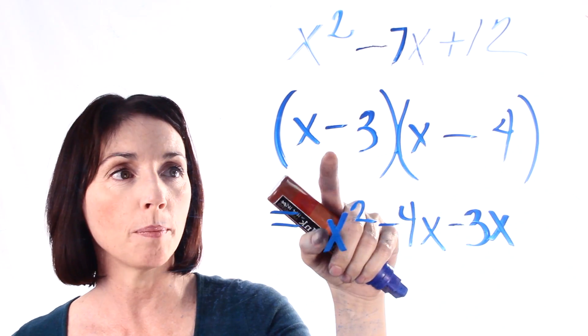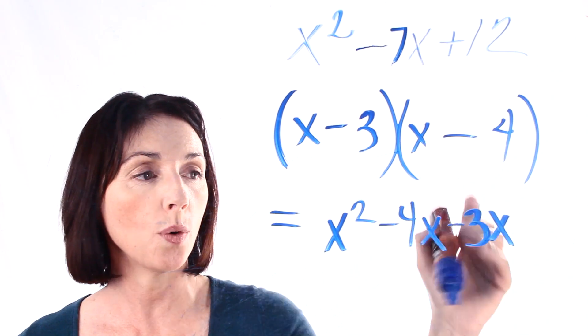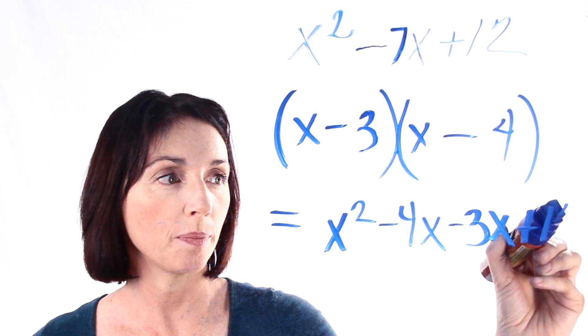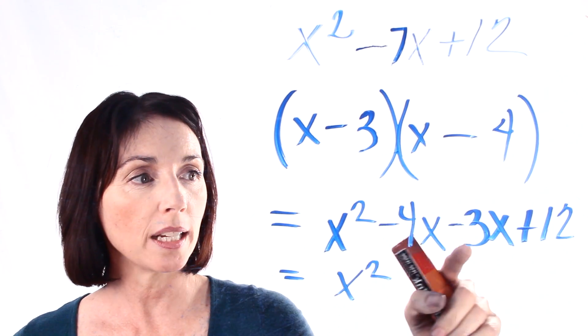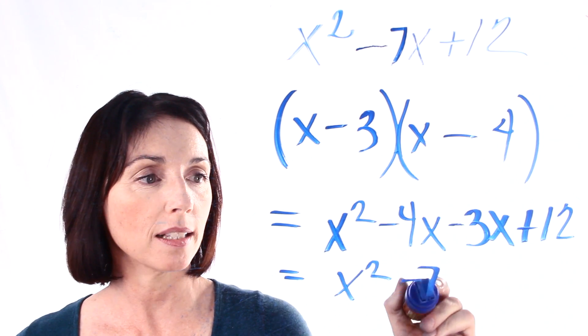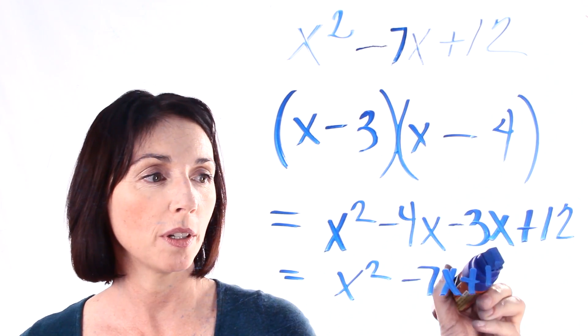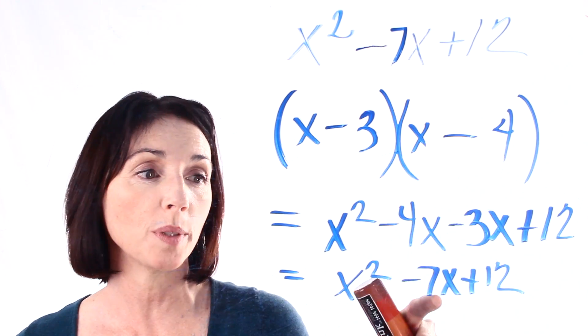And here we have a minus 3 times a minus 4. And that's plus 12. Now if we simplify this we get x squared minus 4x minus 3x is minus 7x. And then we have our plus 12. Which is exactly the expression we started with.